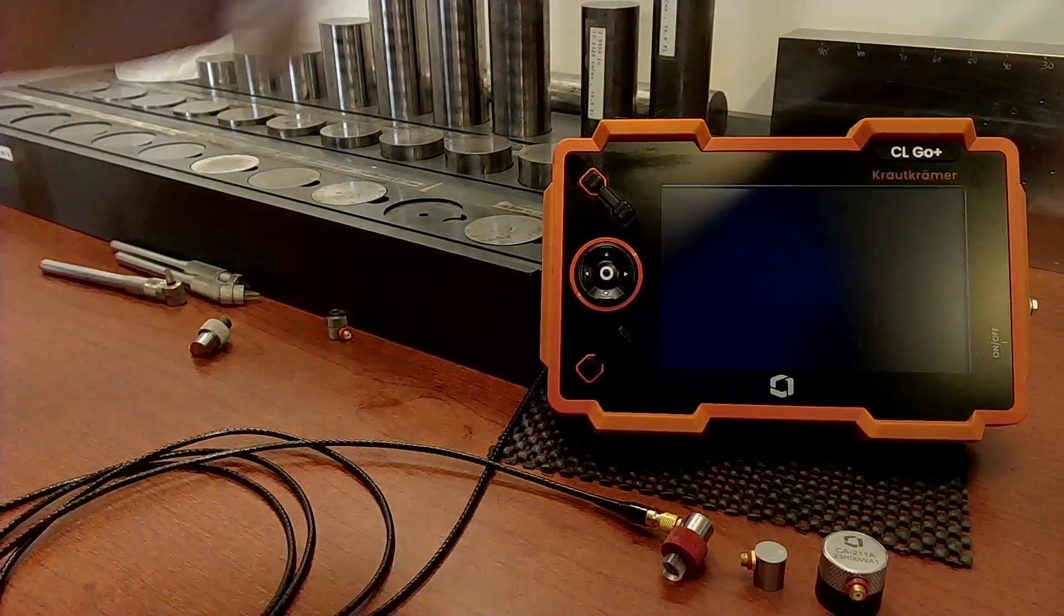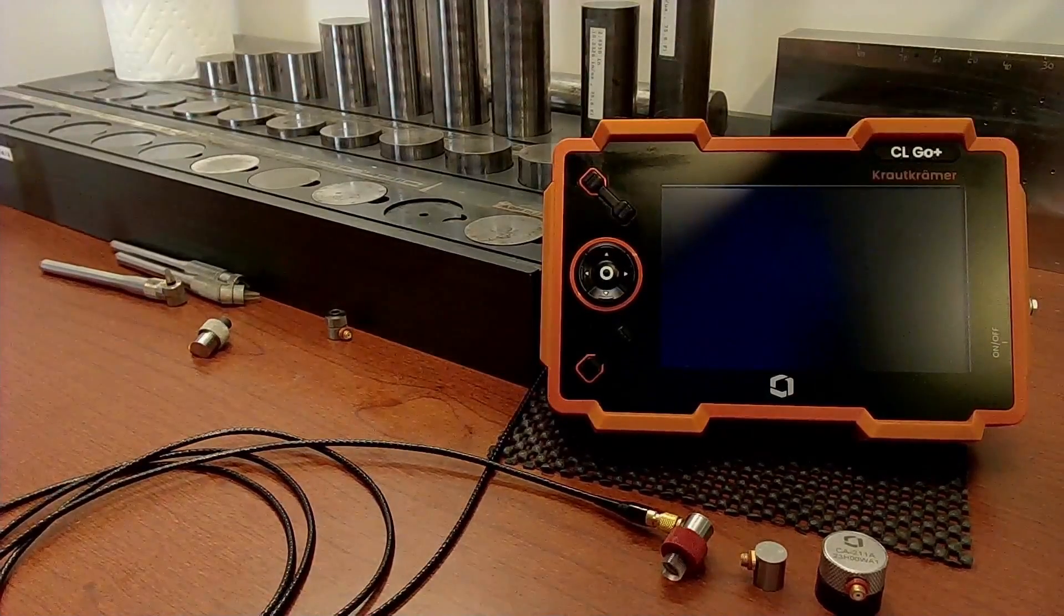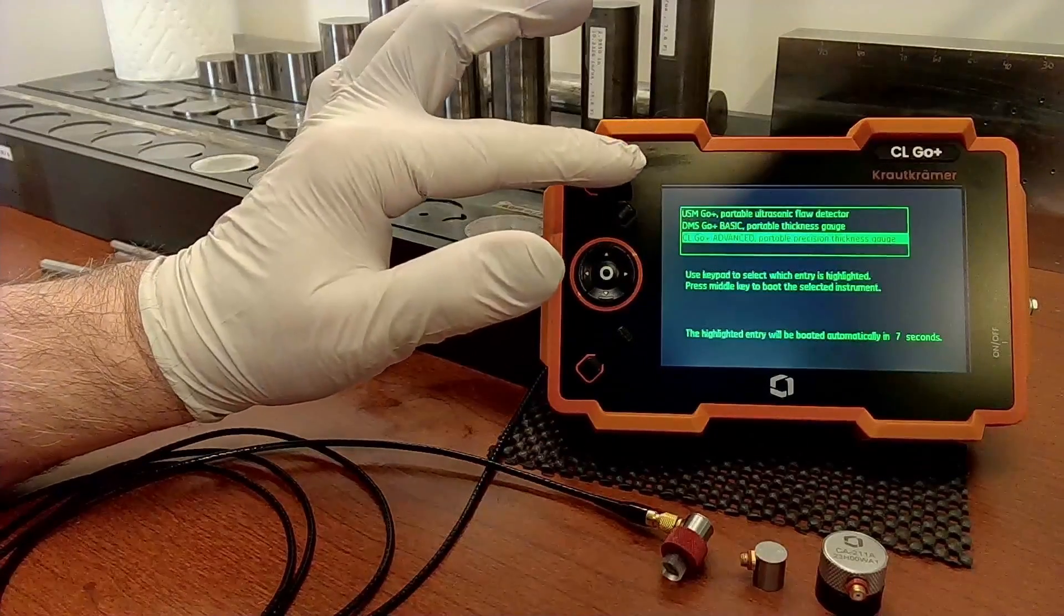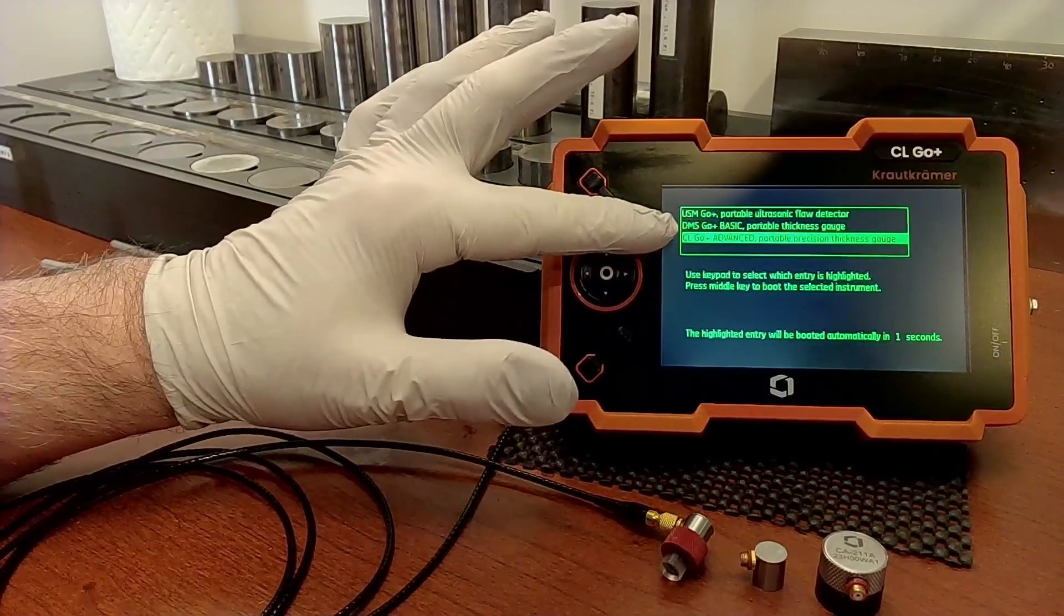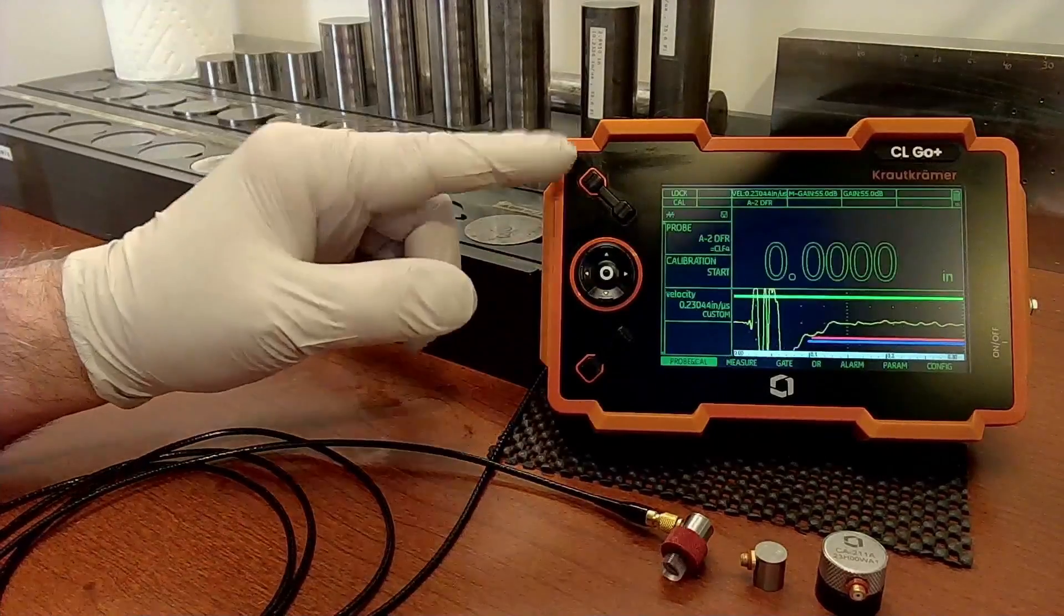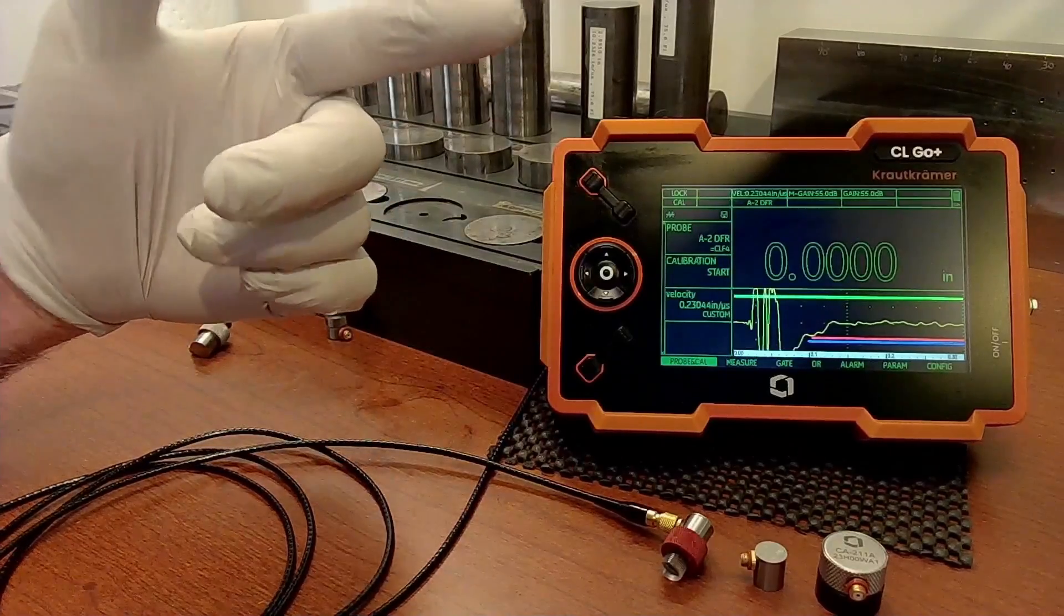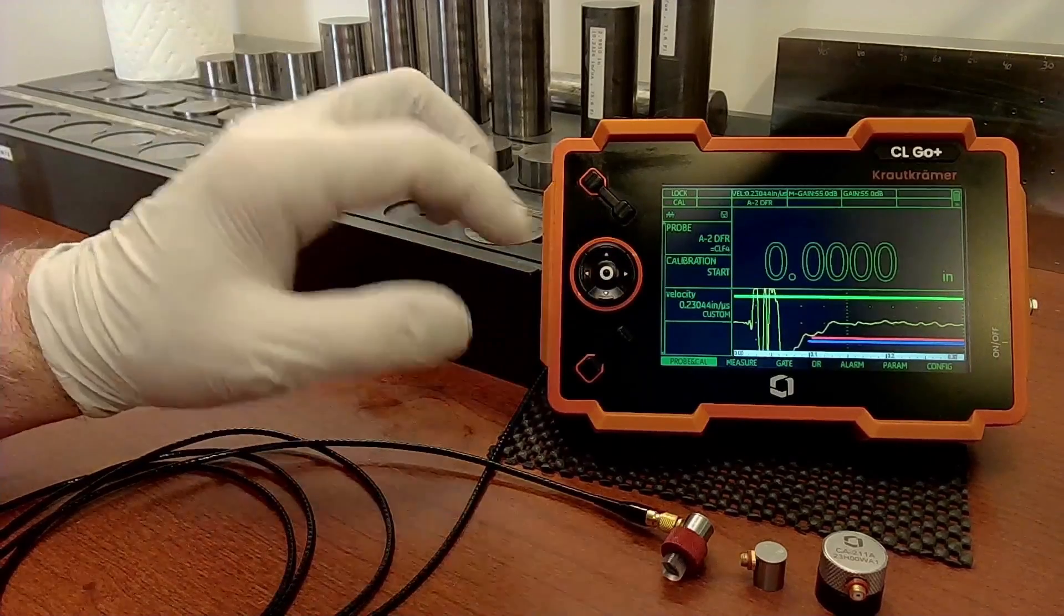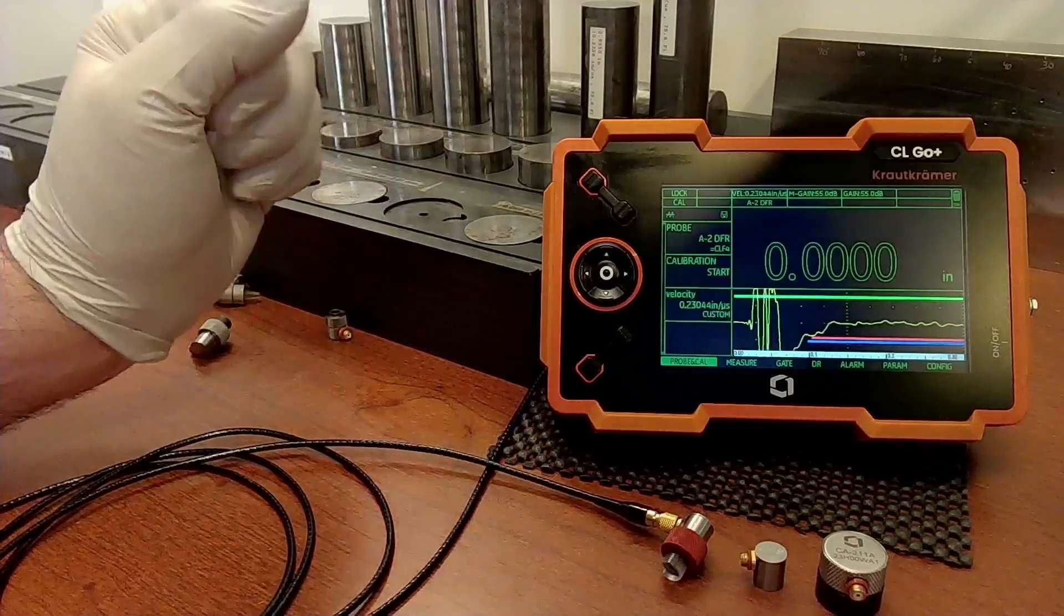Let's turn the instrument off and we'll show you how simple this instrument is to operate. Turn the instrument on, let it boot up. This instrument that I happen to have in front of me has all of the options. It's a combo unit with all of the options for flaw detection, thickness gauging, corrosion thickness gauging, and precision thickness gauging. During the boot process, you can choose do you want the flaw detector, corrosion gauge, or precision gauge. And if we don't do anything like I did just there, the instrument will boot back up into the same mode that it was in when it was last shut down.